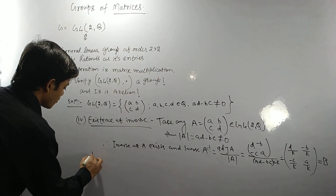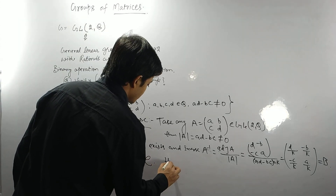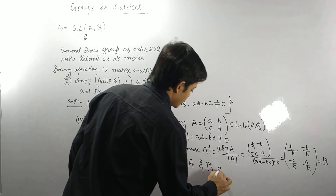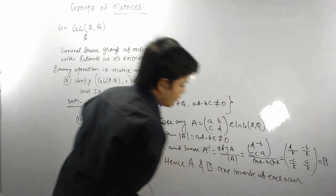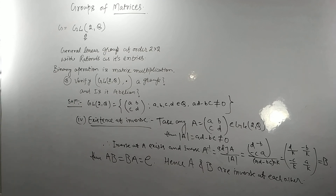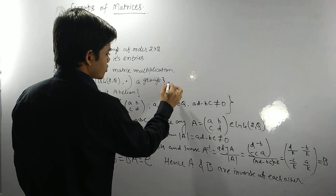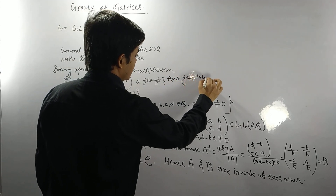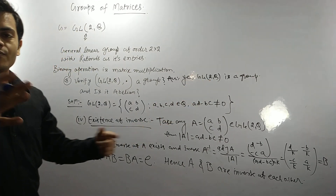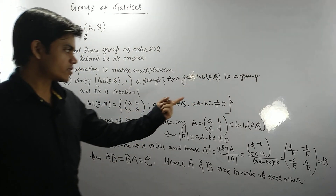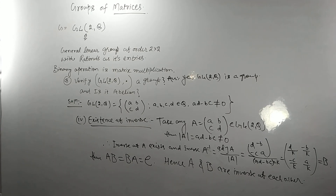Calling B = A⁻¹, we get A·B = B·A = E, so A and B are inverses of each other. Hence existence of inverse is verified. Therefore GL(2,Q) with respect to matrix multiplication is a group. This also holds for any square matrix of any size with rational entries.